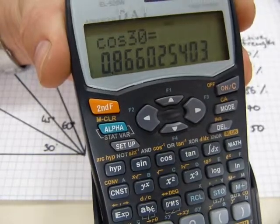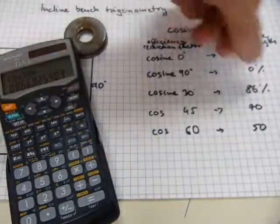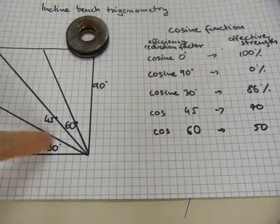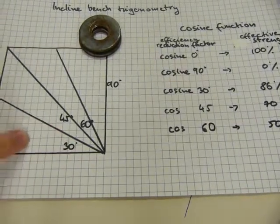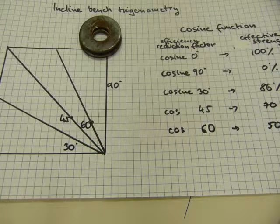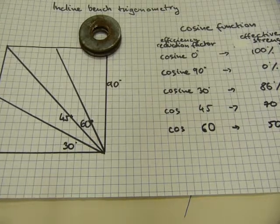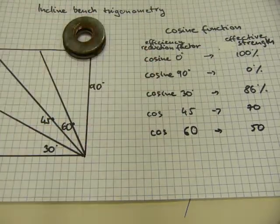If you move the decimal two spots over, you get eighty-six percent out of it. The thirty degree incline bench work reduces your effective strength to about eighty-six percent of what it was when the bench was horizontal.